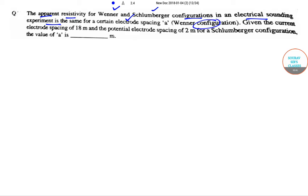For a Wenner configuration, given the current electrode spacing of 18 meters and potential electrode spacing of 2 meters for a Schlumberger configuration, find the value of 'a'. So we need to find this. Let me make an array first.